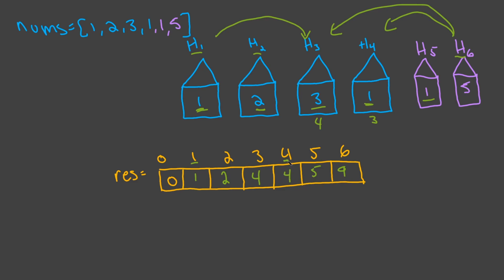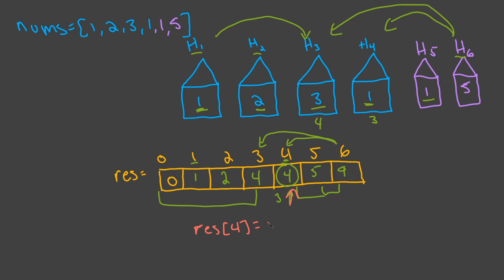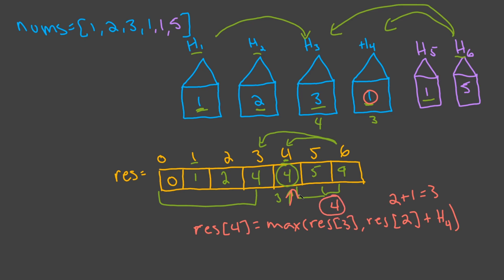The reason we stored 4 at house 4 rather than 3 is to keep the algorithm simple — we only ever access the previous two values. The formula for index 4 is: result[4] = max(result[3], result[2] + house_value), which is max(4, 2+1) = max(4, 3) = 4. That's why we stored 4.